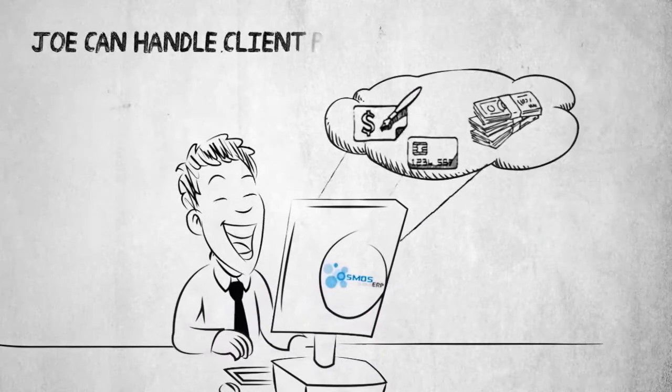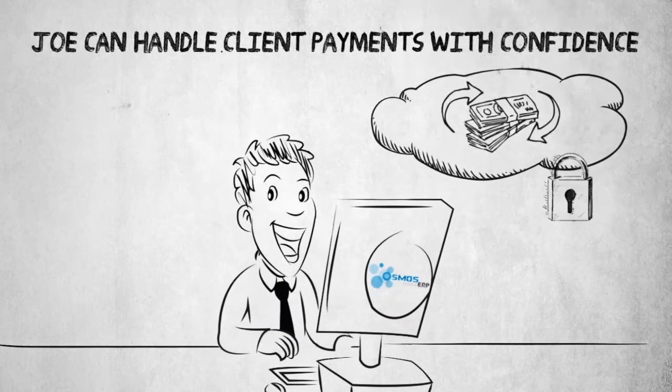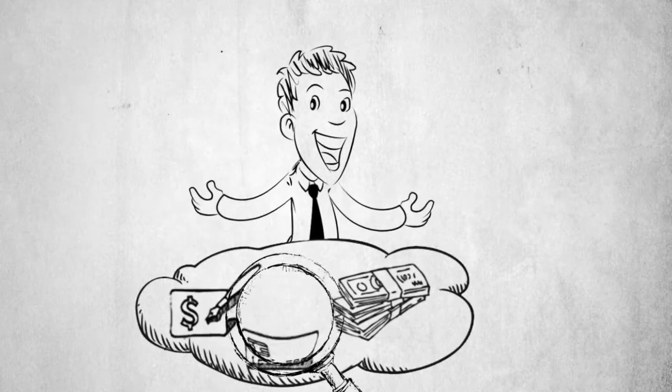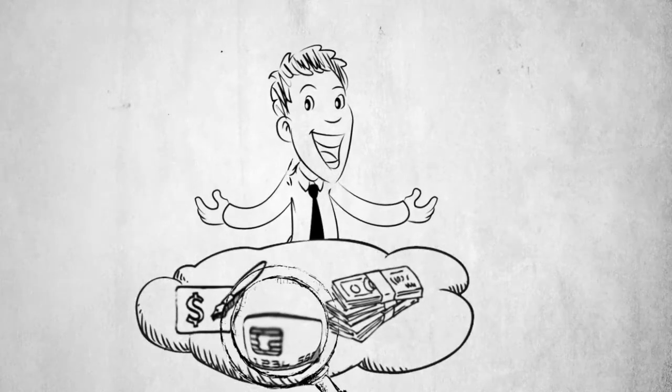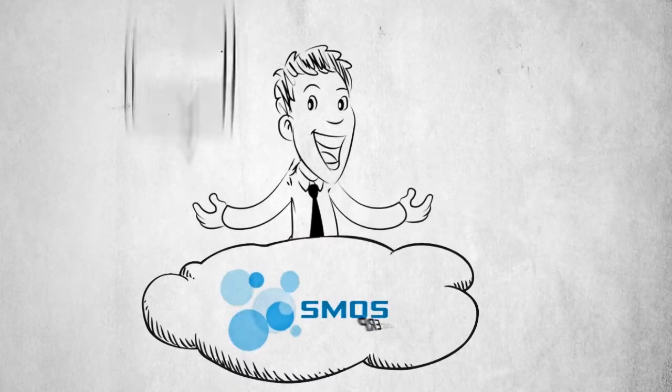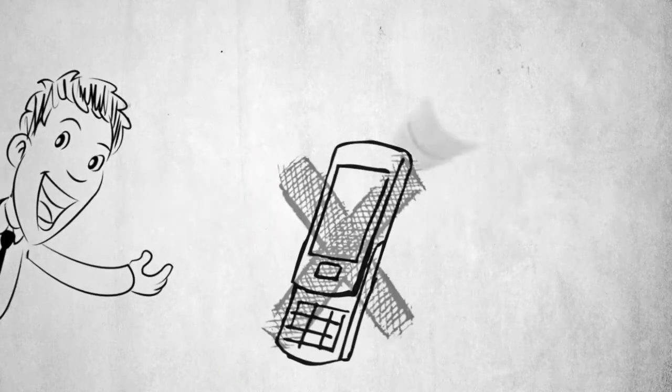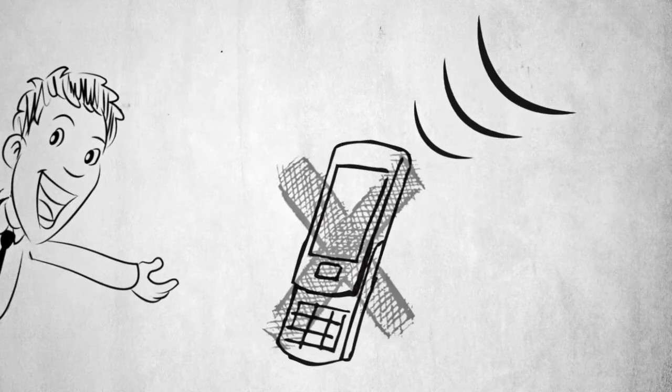Now, Joe can handle client payments with confidence and security by using the accounts receivable module. This helps him track payments received and payments that are due. Osmos will automatically notify Joe and his clients about due payments. That's awesome. There's no more calling clients to remind them that a payment is due.